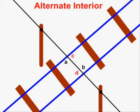Angles C and D are also alternate interior. They are alternate because they are found on opposite sides of the transversal, and they are interior because they are both found on the interior of the pair of parallel lines. Angles C and D, because they are alternate interior, have to have the same angular measure. They are congruent.